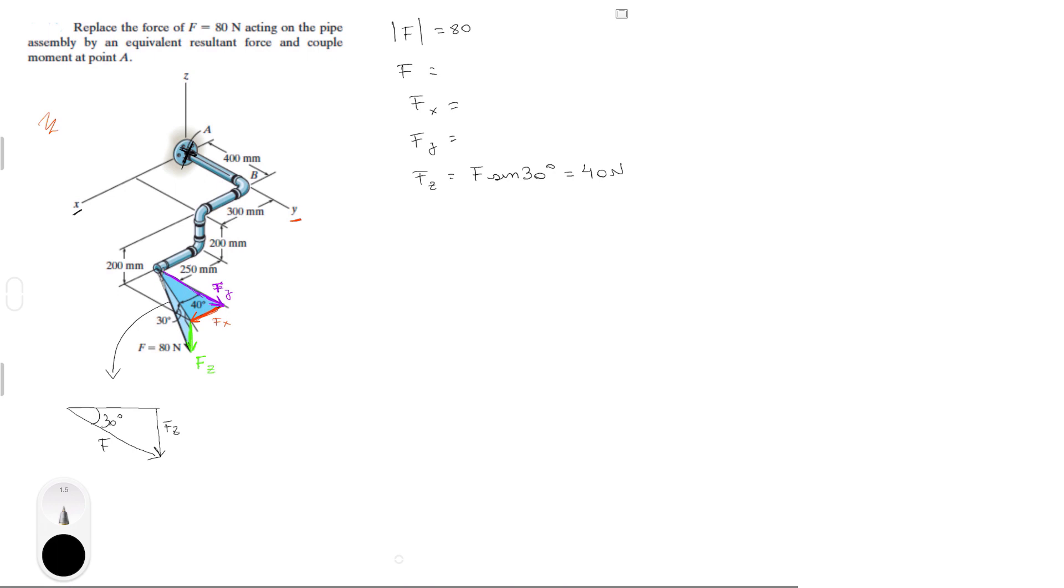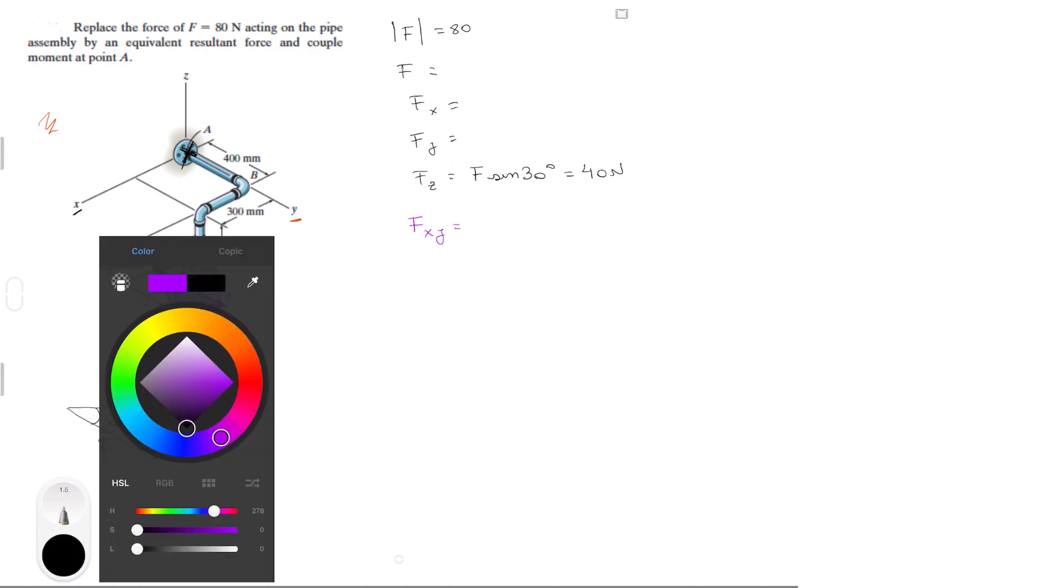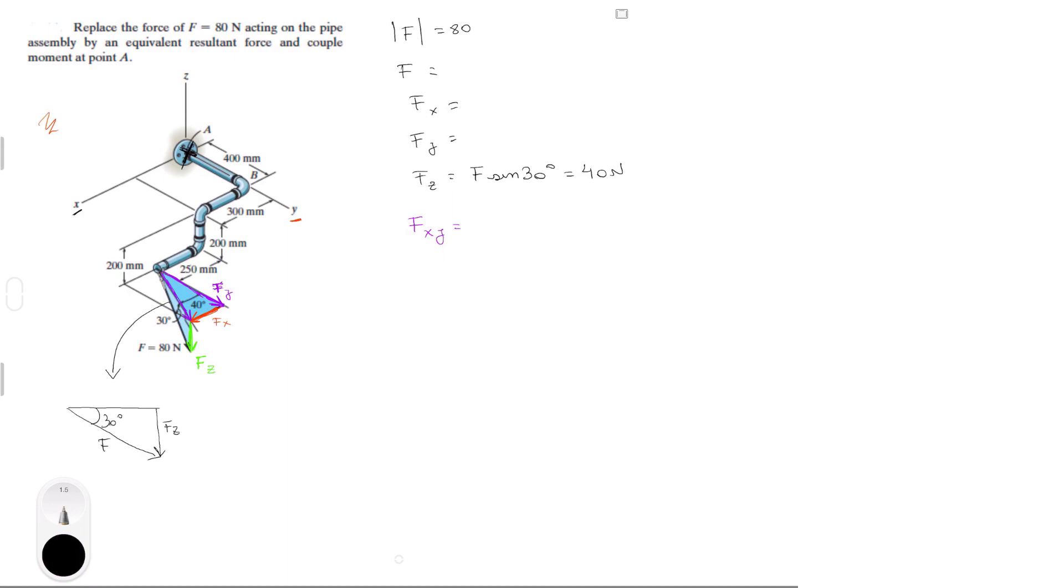Now we got to find the other two. To find F of Y and F of X, you first need to find this line right here, which we're going to call F of XY, which is a projection of F on the X and Y plane. Hopefully that makes sense to you guys. But basically, by finding this line, we can get this other triangle, which allows us to find F of Y and F of X. So if you don't get it, just follow along and you would get it. It's super easy. So to find F of XY, you do F cosine of 30, which comes out to be 69.3 newtons. And now we got F of XY.